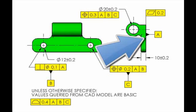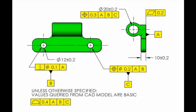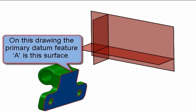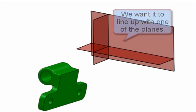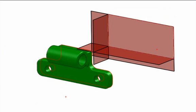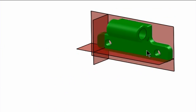On this part, we've selected datum feature A as that surface. So we want to take that surface, especially if it's in an inspection setup, and align it to a measurement plane. When we do that, that will constrain or arrest three of the six degrees of freedom.